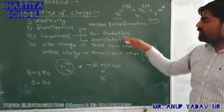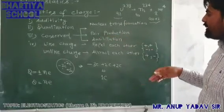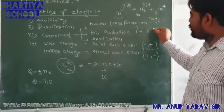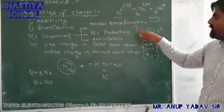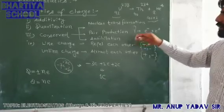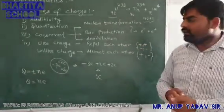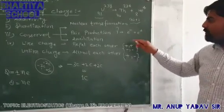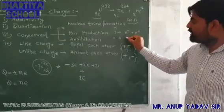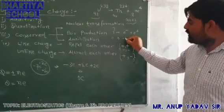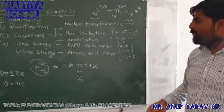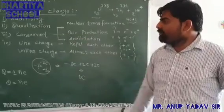The second process demonstrating conservation of charge is pair production. A gamma ray, which carries no charge, materializes into an electron and a positron when passing through matter. The net charge before is zero, and after it is (−1) + (+1) = 0. So charge is conserved.